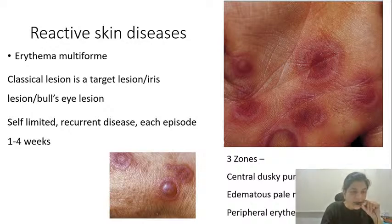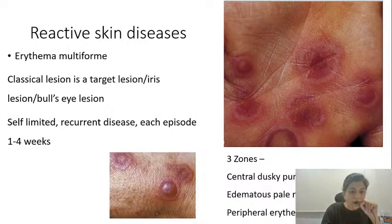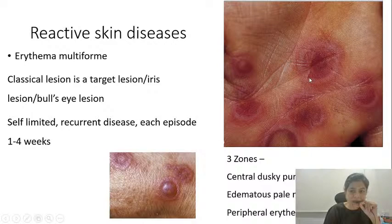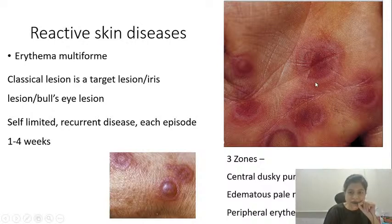The difference is that in cases of SJS/TEN, you do not get the typical targets as you get in erythema multiforme. They have atypical targets, also called targettoid lesions. The difference is that instead of three zones, they have just the central dusky erythema and an erythematous flare. The targettoid lesions or the atypical targets of SJS and TEN lack the middle pallor — the middle zone of pallor suggesting dermal edema is not present in cases of SJS and toxic epidermal necrolysis.